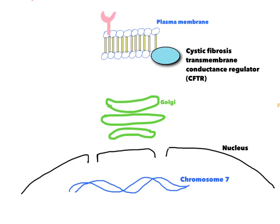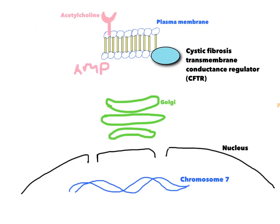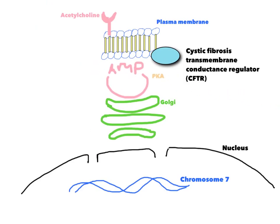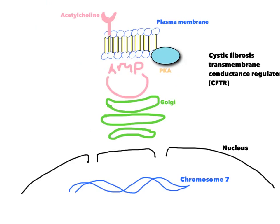This cystic fibrosis transmembrane conductance regulator, CFTR, has an R domain, which is a regulatory domain, and a nucleotide binding domain. When ligands such as acetylcholine bind to receptors on the cell surface, they initiate a reaction that causes the production of cyclic AMP. That in turn results in the activation of protein kinase A, which binds to the regulatory domain of the CFTR. When this happens, a chloride channel in the CFTR opens up and chloride flows from within the cell out.